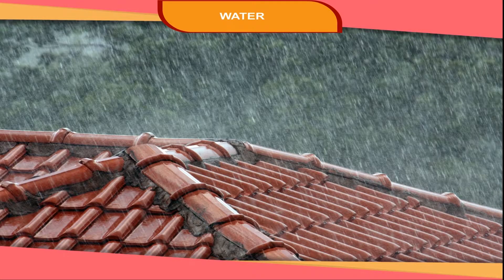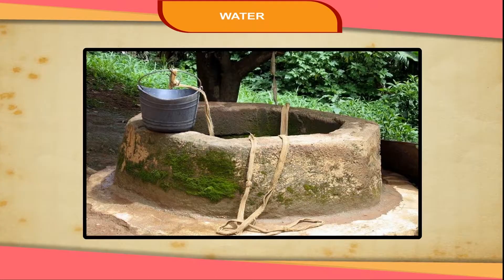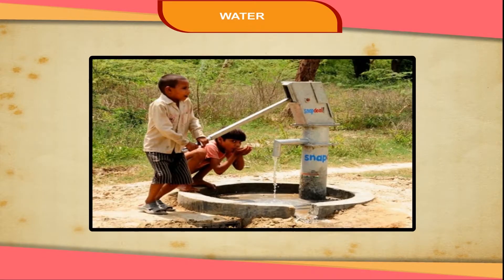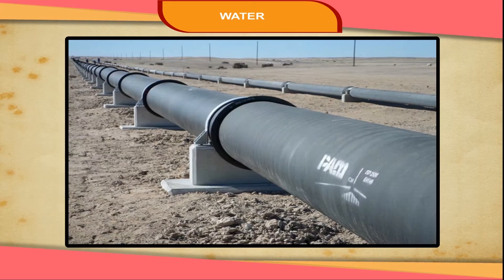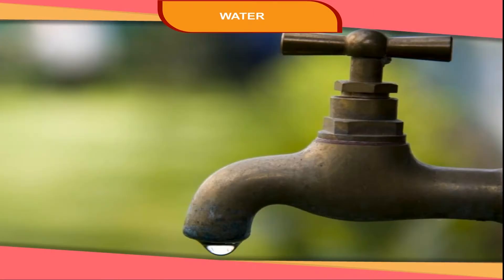Some rainwater goes into the ground. We get the underground water from wells and hand pumps. In towns, water is supplied through pipelines. We get this water from taps.